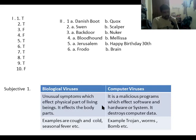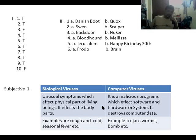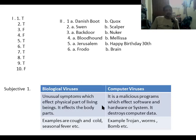Now we move to question number one of the subjective part: distinguish between biological virus and computer virus. A biological virus causes unusual symptoms and affects the physical parts of living beings — it affects the body parts of living beings. A computer virus is a malicious program which affects software and hardware or the system; it destroys computer data. Examples include worms, bombs, etc.